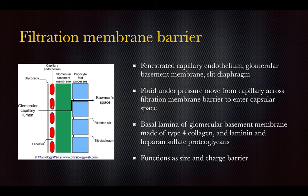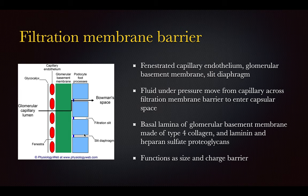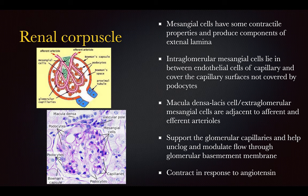The filtration membrane barrier consists of three layers: a fenestrated capillary endothelium, the glomerular basement membrane, and the slit diaphragm. Fluid under pressure moves from the capillary across the filtration barrier into the capsular (Bowman's) space. The glomerular basement membrane's basal lamina is made of type 4 collagen, laminin, and heparan sulfate proteoglycans, functioning as a size and charge barrier. Mesangial cells have contractile properties thought to help squeeze fluid through.